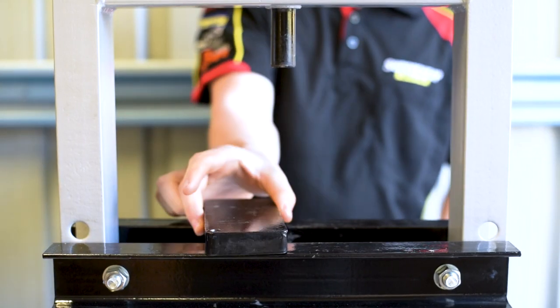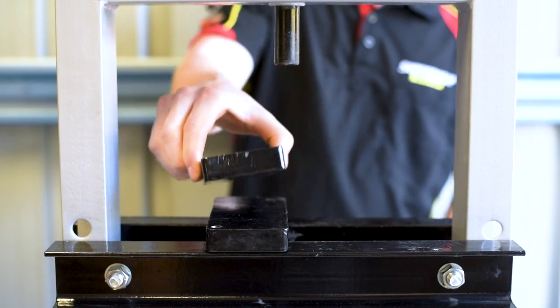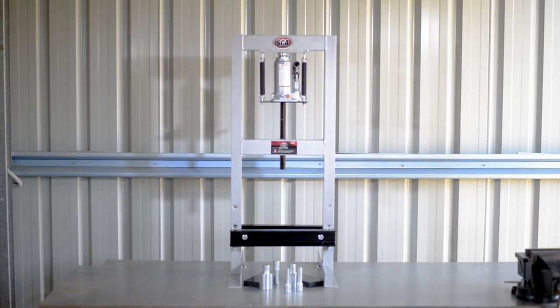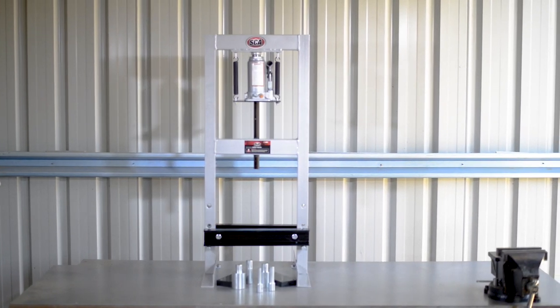Arm yourself with an SCA 6000kg ShopPress, include a few accessories, and you're bound to find it useful for all these jobs and many more around the workshop.